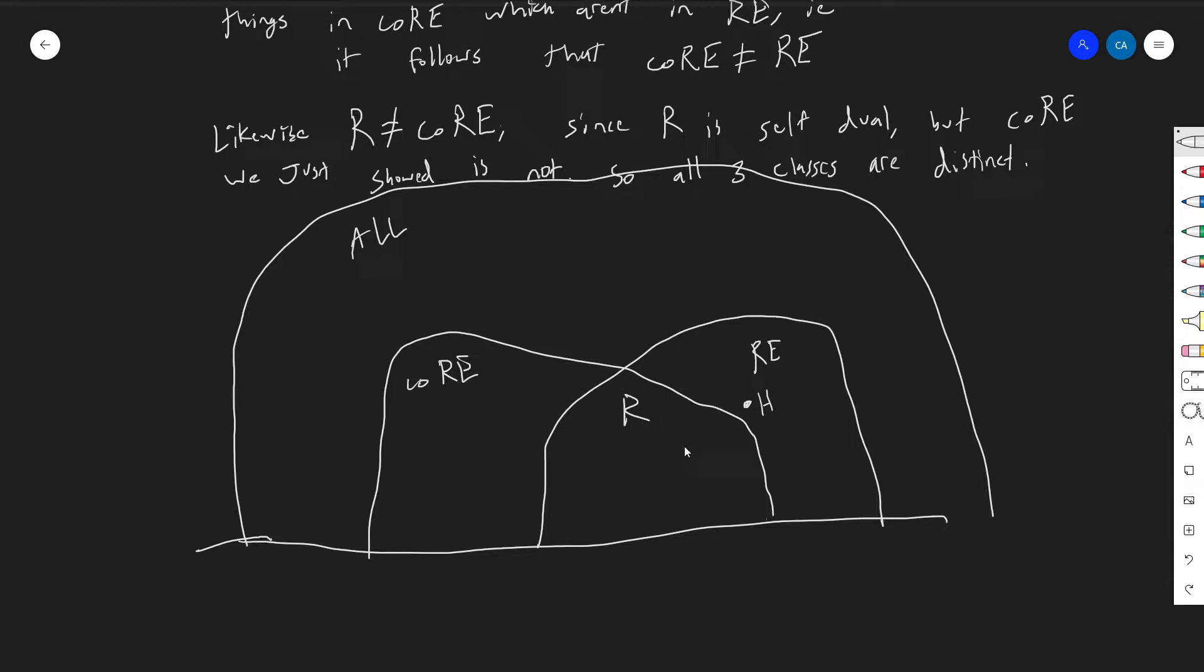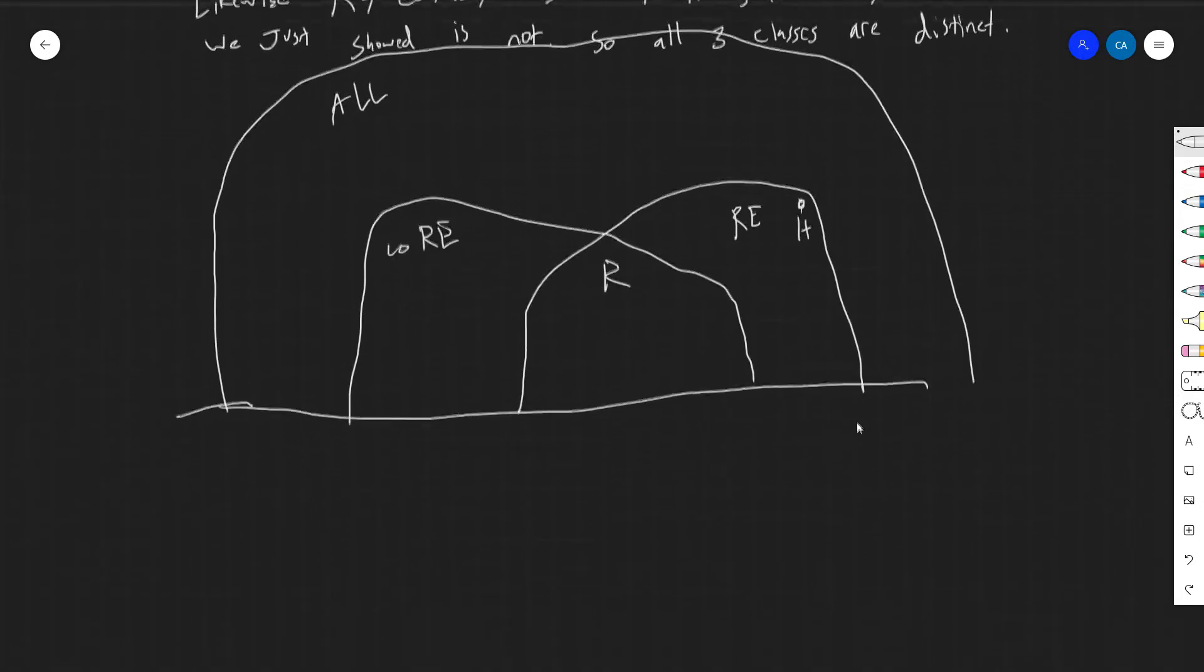And it's not in R, and it's not in co-RI, so it's got to be here, specifically. We're starting to kind of push things, push problems into specific places. In fact, you can probably and probably should put H actually up here in the corner, right? Because we said it was like one of the hardest problems in RI. So it's difficult as a problem in RI yet, so we should probably kind of put it on the border.